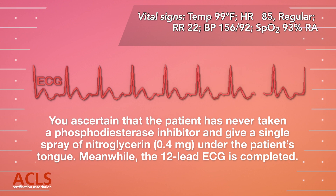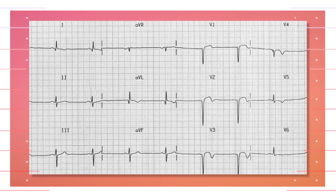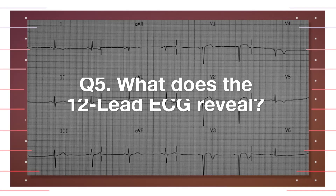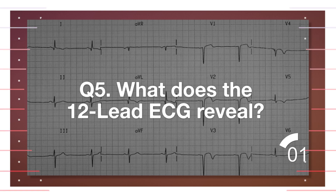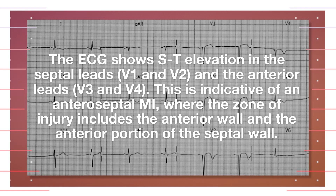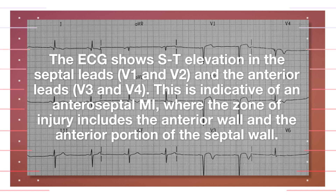Meanwhile, the 12-lead ECG is completed. What does the 12-lead ECG reveal? The ECG shows ST elevation in the septal leads and the anterior leads V3 and V4. This is indicative of an anteroseptal MI where the zone of injury includes the anterior wall and the anterior portion of the septal wall.